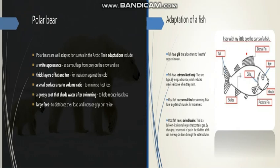The last adaptation is large feet to distribute their load and increase grip on the ice. With the help of their feet, they can easily walk on the ice. Their grip on the ice is very strong. So polar bears can easily survive in cold areas with the help of their fur, greasy coat, color, and feet.